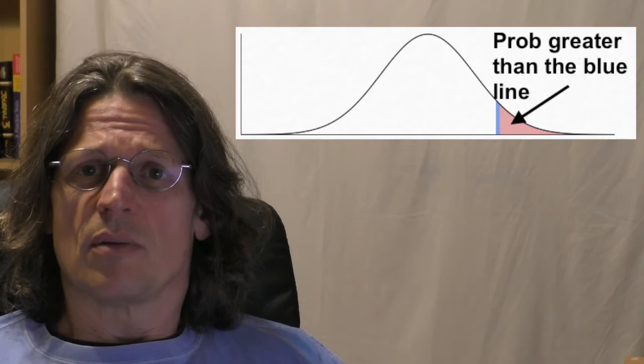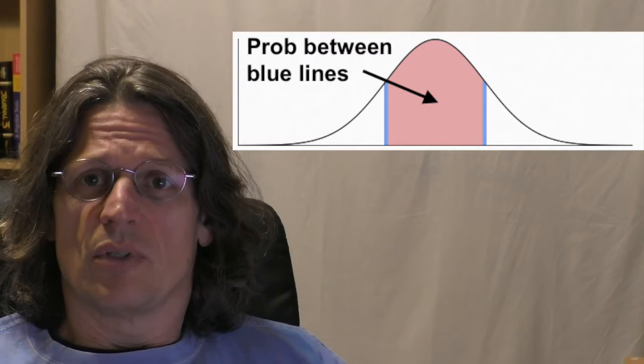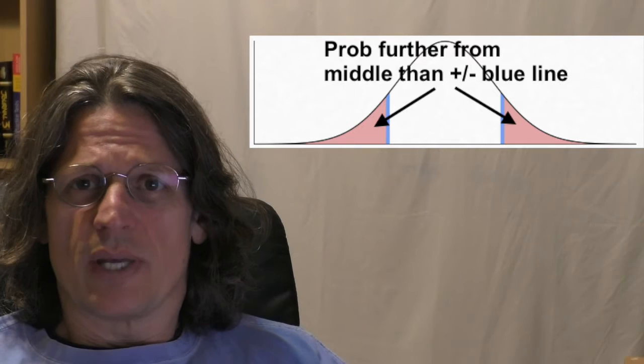So what we're going to do today is work some problems. There are going to be four types of problems: what's the probability that you're bigger than some number, or smaller than some number, or between two numbers, or more extreme than two numbers further away. Those are the four types of questions, and we're going to use height as an example — specifically male height and female height, because both are normally distributed. I'll give you examples using male height and then ask you to work questions using female height.